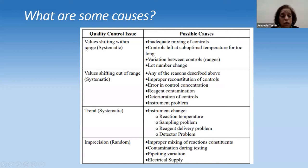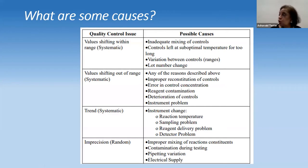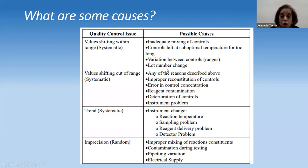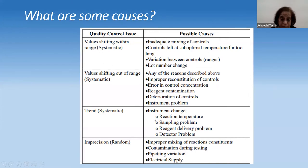There are quality control issues to consider. Value shifting within range is a systematic error — it could be due to inadequate mixing of controls or controls left at suboptimal temperature too long. If values are out of range, it is again a systematic error. If there is a trend, it could be an instrument change — look at reaction temperature, sampling problems, reagent delivery problems, and similar factors.